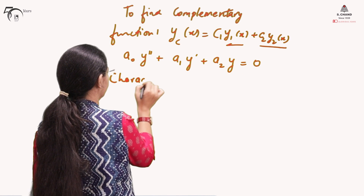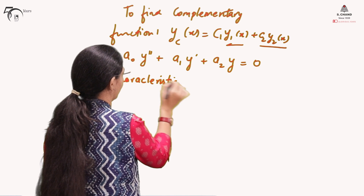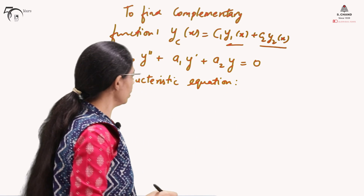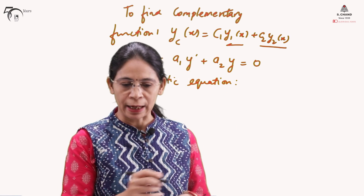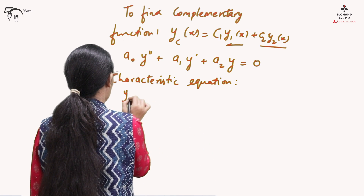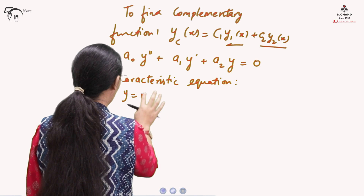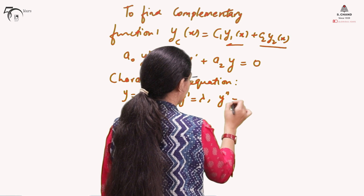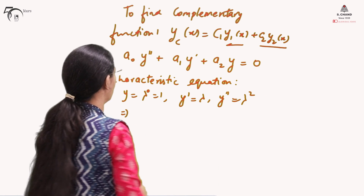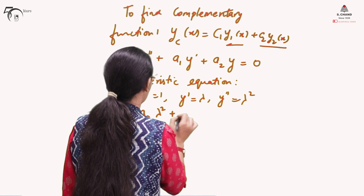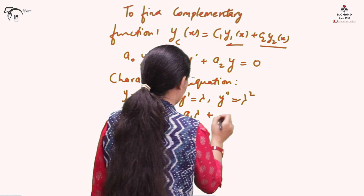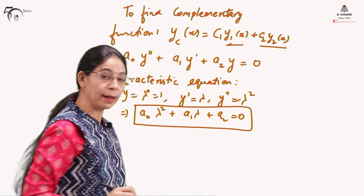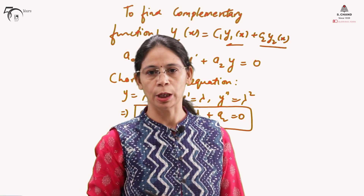To write down the characteristic equation, we replace the derivatives of y with lambda: y is replaced by λ⁰ = 1, y' by λ, and y'' by λ². The characteristic equation then becomes A₀λ² + A₁λ + A₂ = 0. This is the characteristic equation used to find the complementary function of a linear differential equation with constant coefficients.